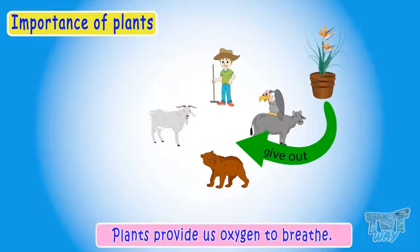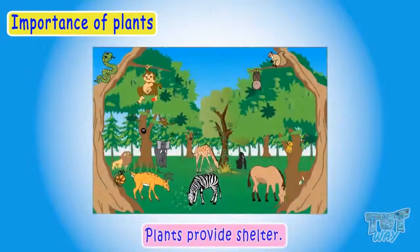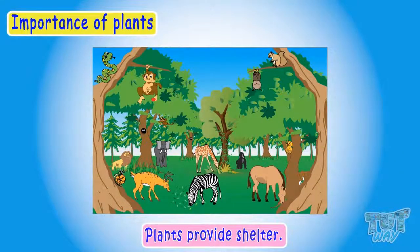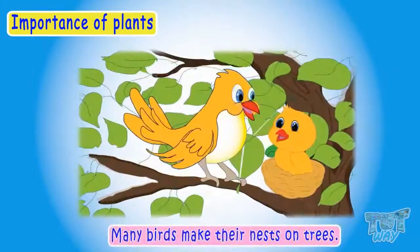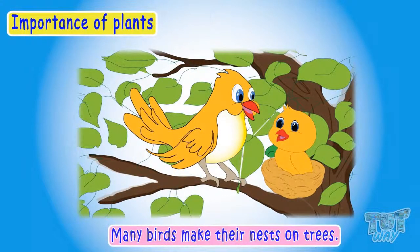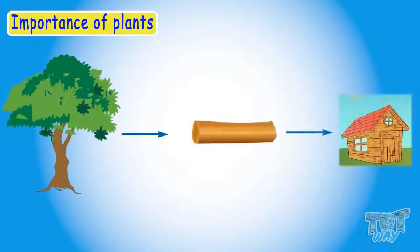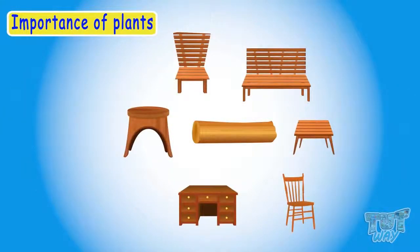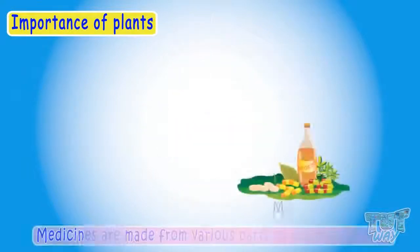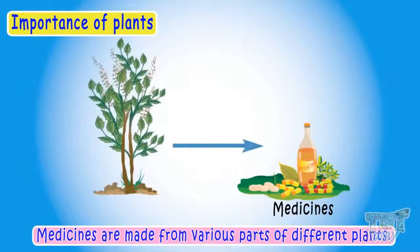Plants provide shelter to many birds and insects. So many birds make their nests on trees. Even we need plants for shelter as plants provide wood for our furniture and so many things for our house. Most of the medicines are made from the various parts of different plants.